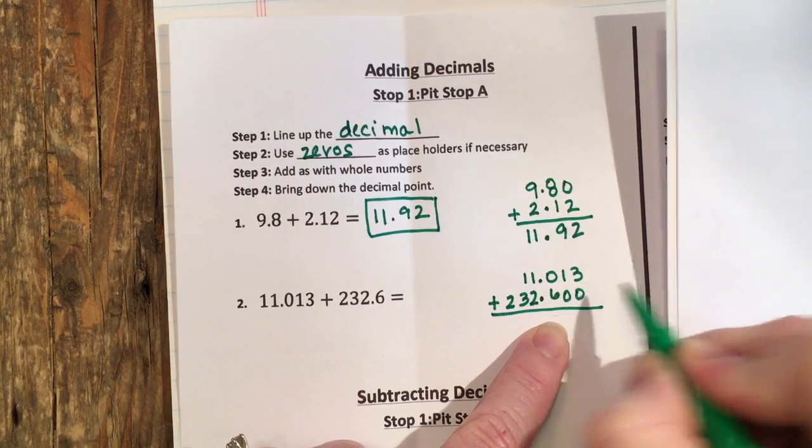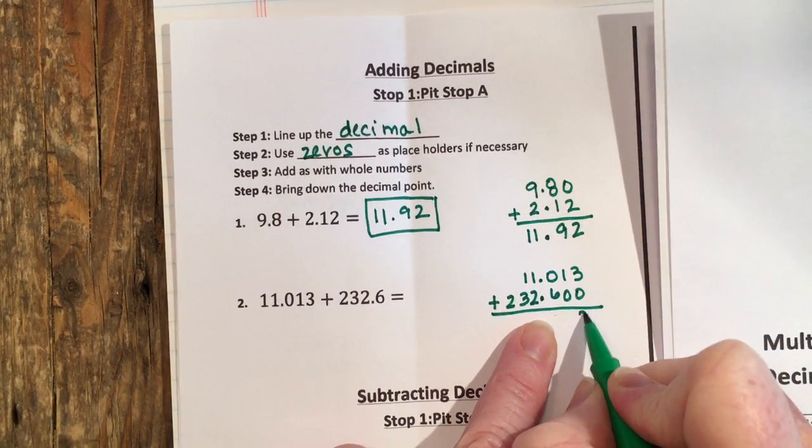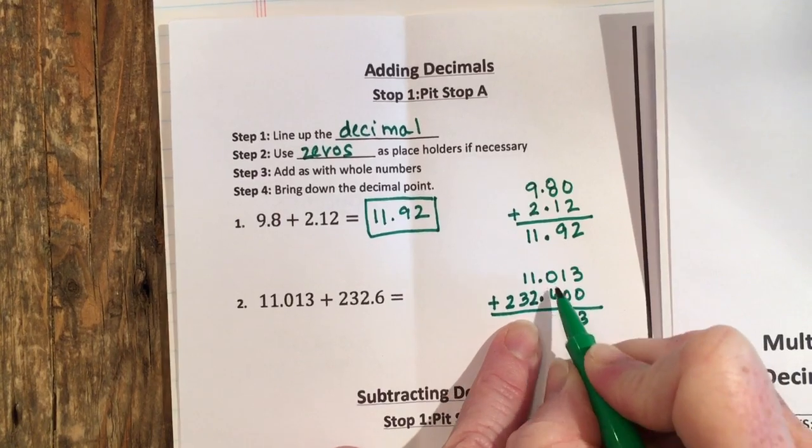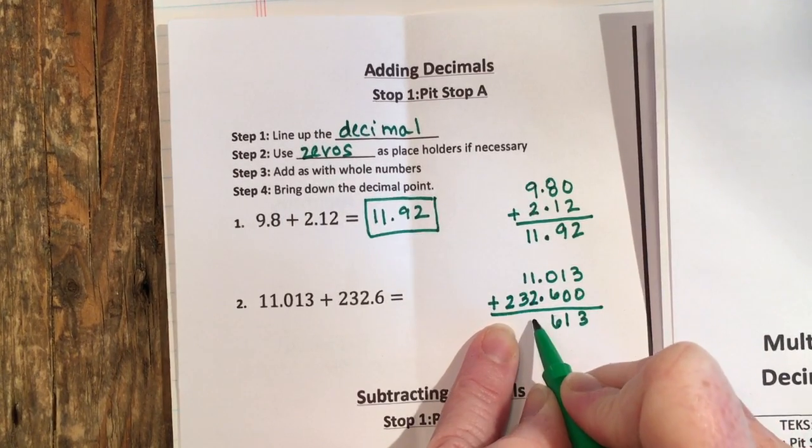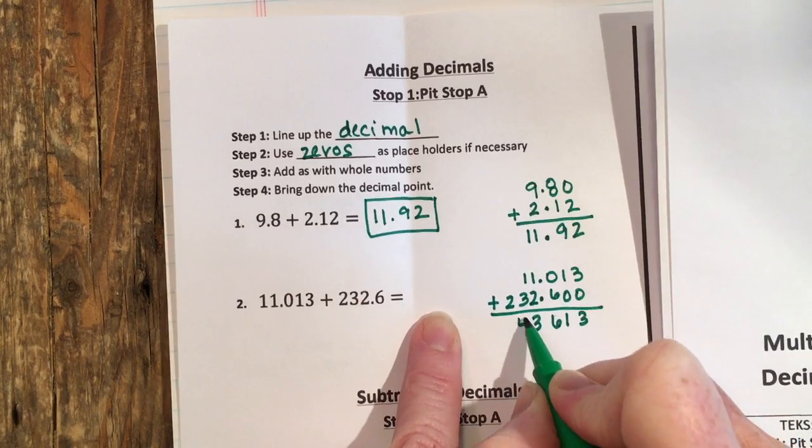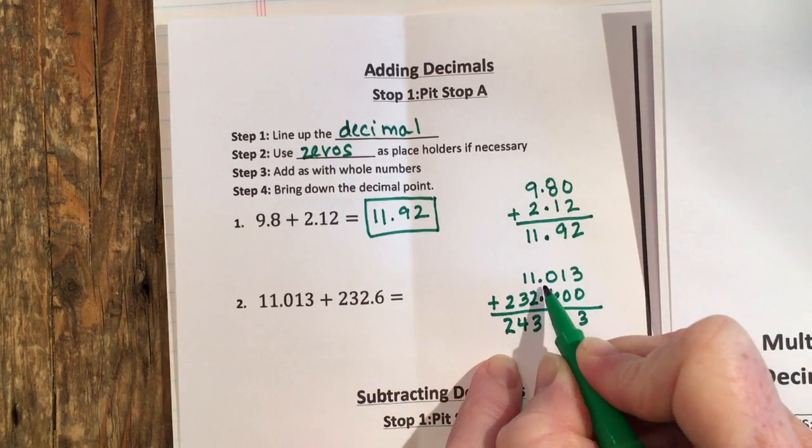So 3 plus 0 is 3, 1 plus 0 is 1, 0 plus 6 is 6, 2 plus 1 is 3, 3 plus 1 is 4. And then I bring down the 2, drop down the decimal, and the number is 243.613.